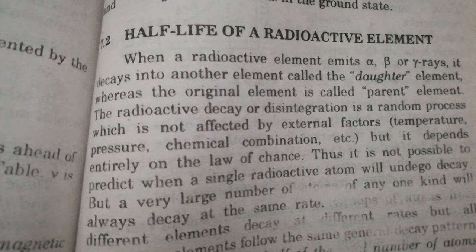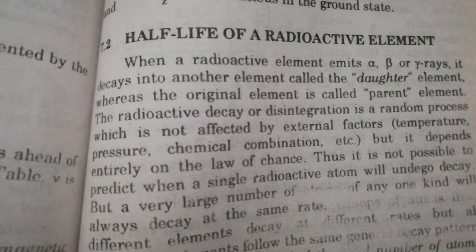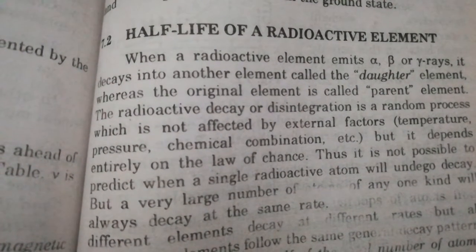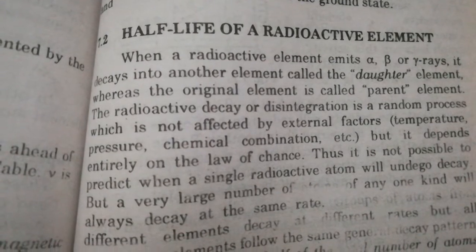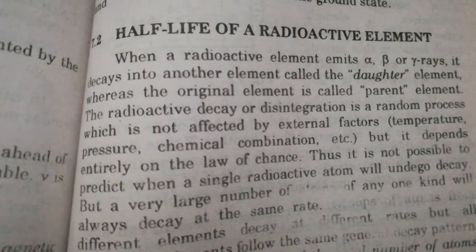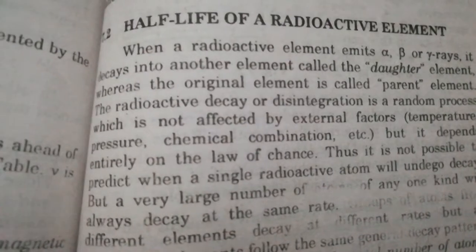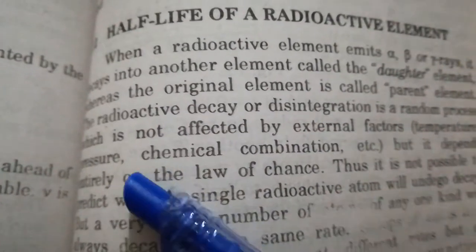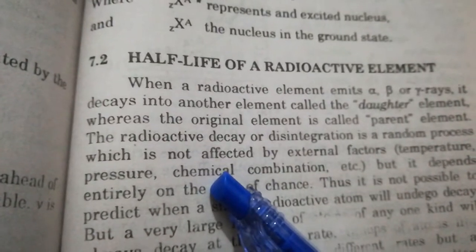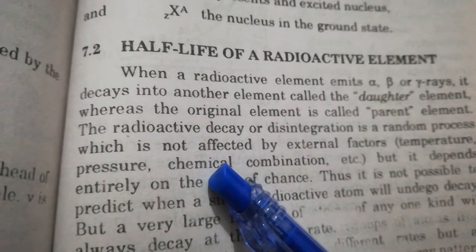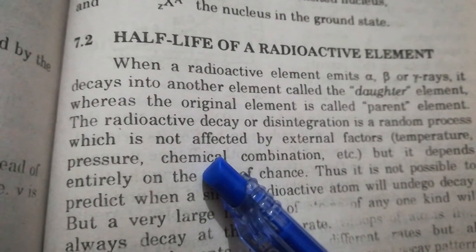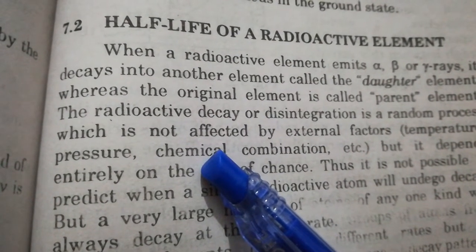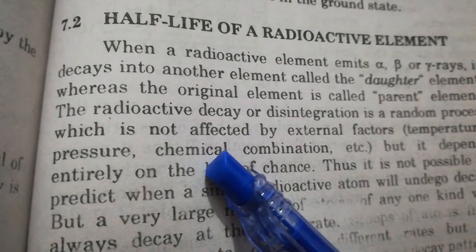This radioactive element is found in nature — uranium is an example. This radioactive element emits alpha, beta, and gamma rays. When we decay this radioactive element, the resulting element is called the daughter element, and the original element before decaying is called the parent element, because after decaying the charge and mass number will be different.